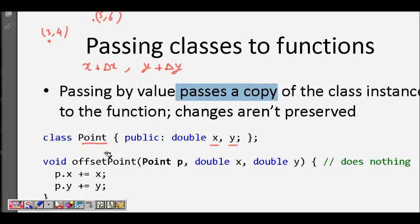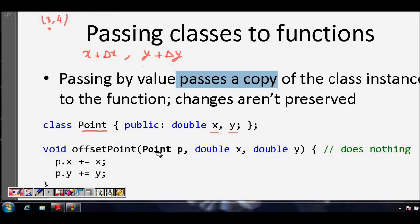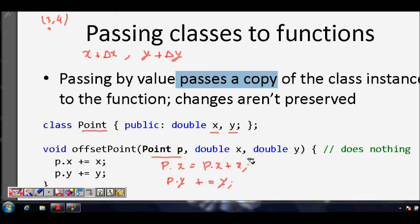Now let's say we want a function which makes an offset — it adds delta x to the x coordinate and delta y to the y coordinate. We make a function as we have done in C, pass the class variable 'Point P', and do P.x = P.x + x and P.y += y. But what happens here is a copy of P is made for pass-by-value, and whatever changes are made happen in that copy.